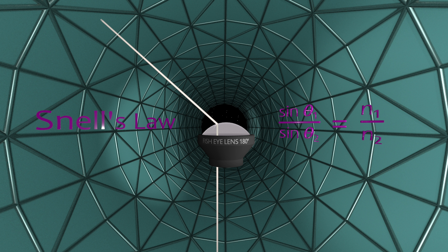This formula relates the angle of the incoming light ray to the angle of the refracted beam. More specifically, the sine of the incoming ray divided by the sine of the refracted ray is a constant. This constant depends on the refractive indices of air and glass. Empowered with this formula, engineers were able to create a lens capable of recording an entire hemisphere.